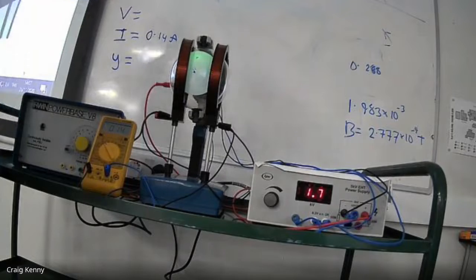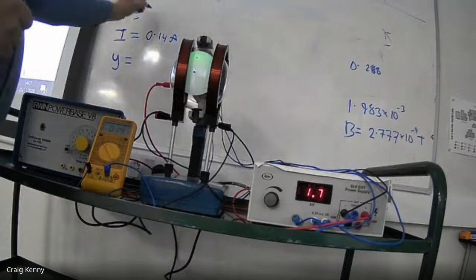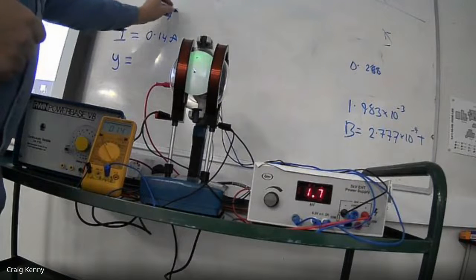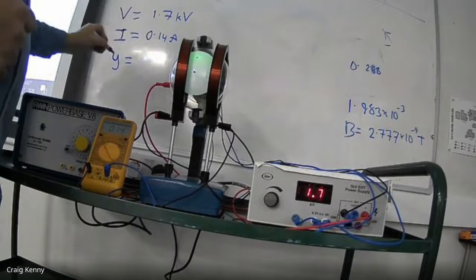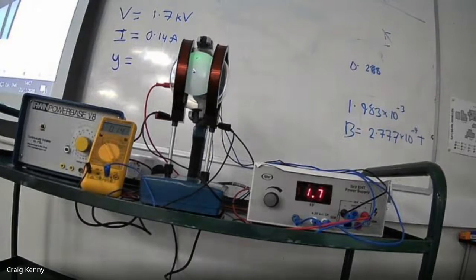My accelerating voltage, at the moment, it looks like it is 1.7 kilovolts. And my deflection, I'm now going to measure it with a ruler.